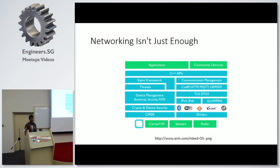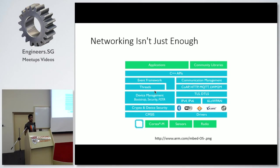Networking isn't just enough. This is a small screenshot of the embed OS, and you can just see the amount of crazy software they've put in there: C++ APIs, events, network, threads. At the end, networking isn't just enough — you need to support much more things apart from networking, including multiple forms of networking. For all this, you really can't do without an OS. Hence you need something like an RTOS.